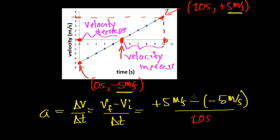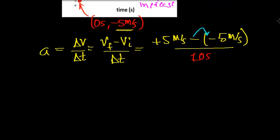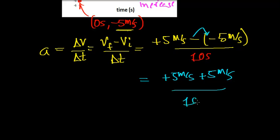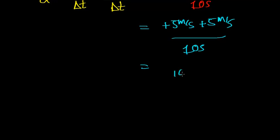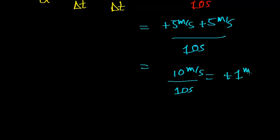One of the big mistakes students often make is encountering this point right here. A negative times a negative is going to be a positive, so what this works out to be is five meters per second minus negative five meters per second, which works out to be five plus five, giving us ten meters per second, divided by a ten second interval of time. So what you get is ten meters per second divided by ten seconds, or an acceleration of positive one meter per second squared.